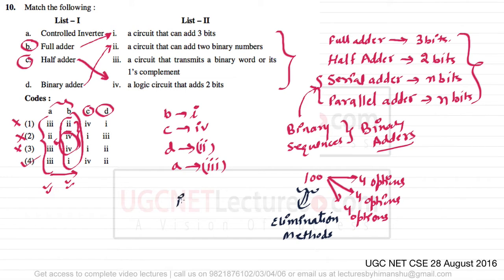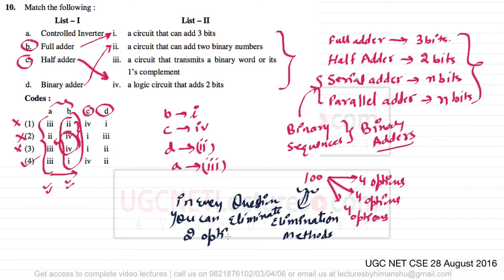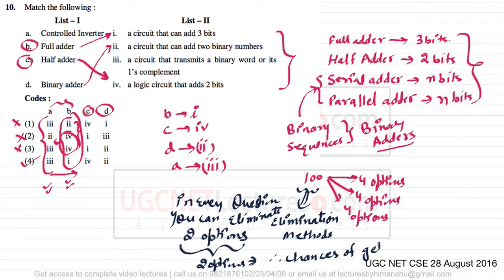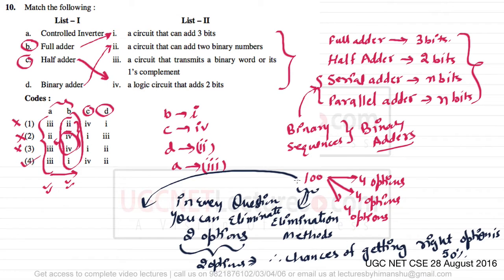In the elimination method, if in every question you can eliminate two options — meaning you can clearly say those two are wrong — then obviously the other two options remain, and the chance of selecting the correct one is 50 percent.